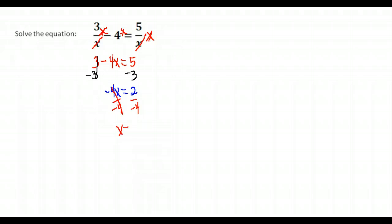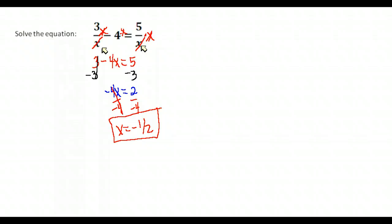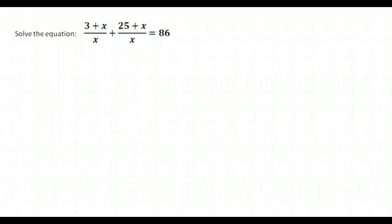One thing to be very careful of when solving these types of equations: it is undefined to have zero in the denominator of a fraction. Go back to the original problem and make sure your solution X equals negative one-half does not make any of the denominators equal to zero. It doesn't — it makes the denominators negative one-half, which is fine. So our solution is X equals negative one-half.